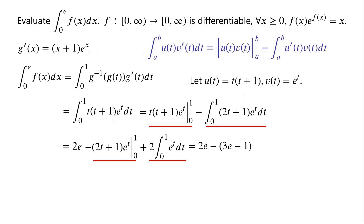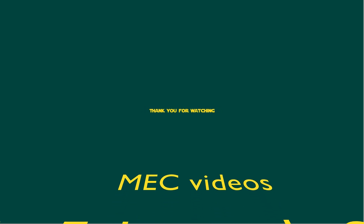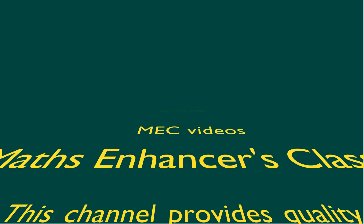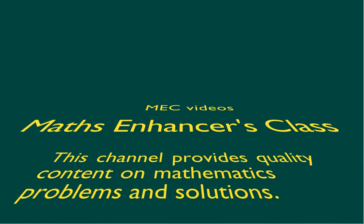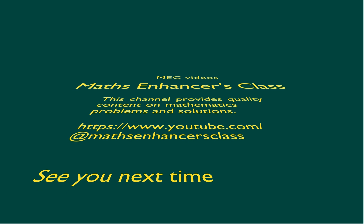2 times the integral from 0 to 1 of e^t dt equals 2·e^t from 0 to 1, which equals 2e minus 2. Combining: negative (3e−1) plus (2e−2) equals 1−e, so the negative integral contributes e−1 to the first part. Putting it all together, the integral equals e minus 1.